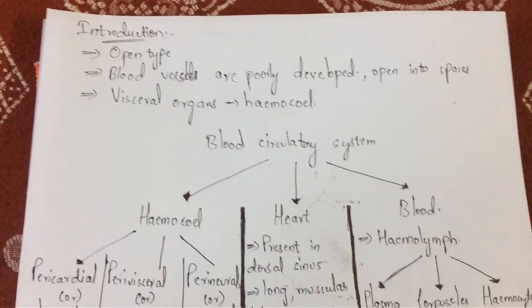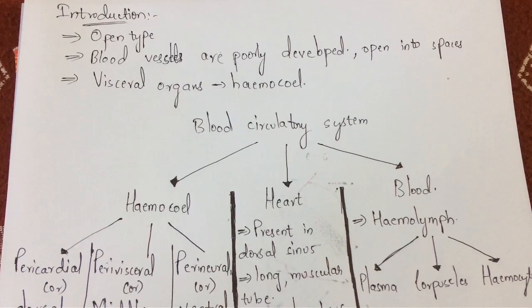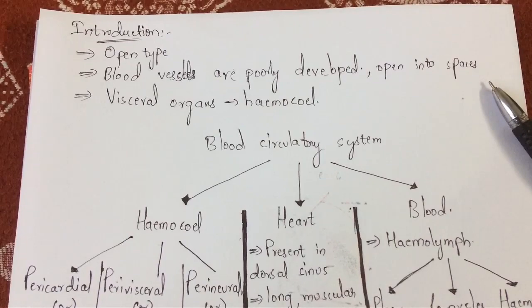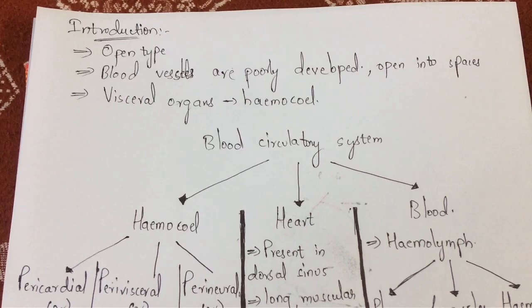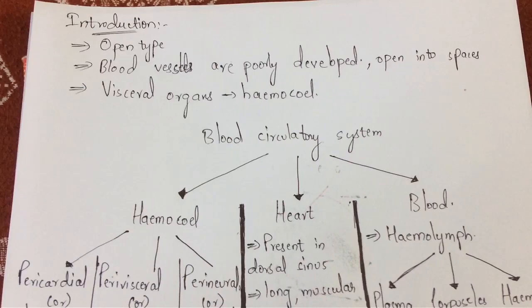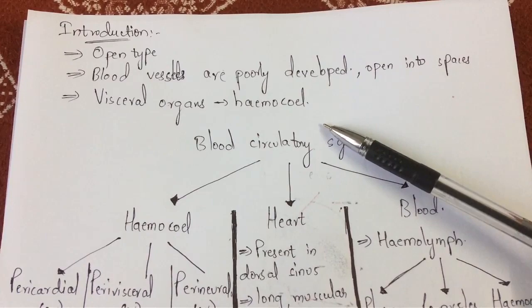What does 'blood vessels are poorly developed' mean? Compared to humans, our blood vessels are highly developed with no open spaces — they are highly specialized. But when compared to Periplaneta americana, the blood vessels are poorly developed. All visceral organs are mainly present in the hemocoel, which is the body part that consists of visceral organs.